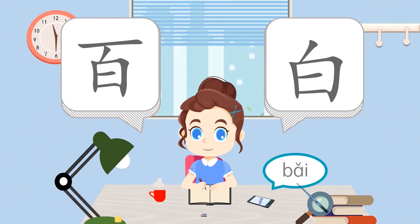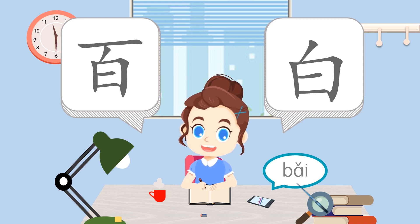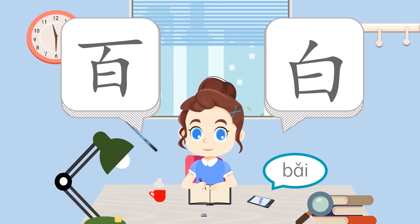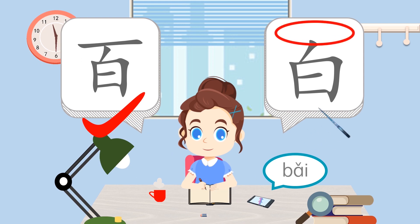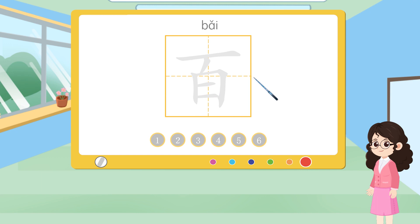摆 — tell me which one is correct. 第1个. Let's see what is wrong with the second character. Now, let's see how to write this character correctly. Please write it once with me.